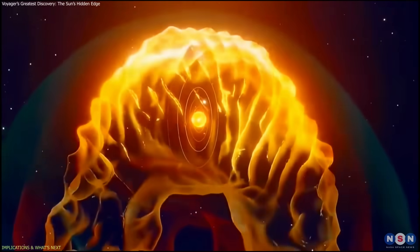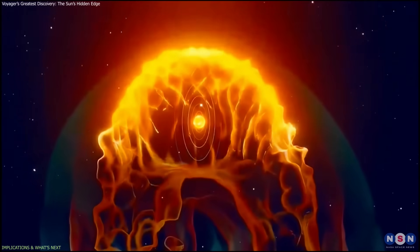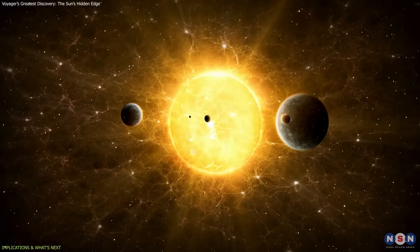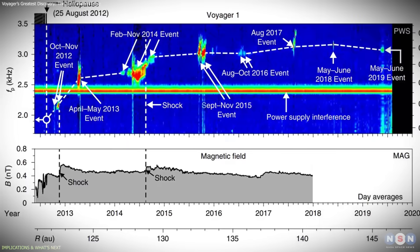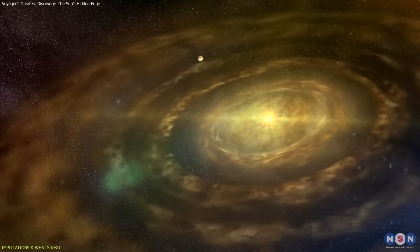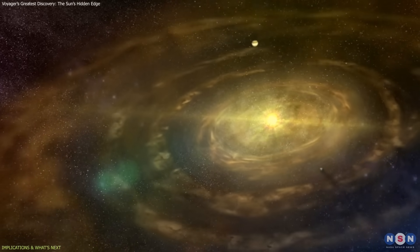The findings also extend far beyond our own system. Every star generates a heliosphere, or astrosphere, that influences nearby planets. The Sun's measured boundary now serves as a template for studying how other stars shield their planetary systems from radiation. This knowledge will help assess which exoplanets might be capable of supporting life.